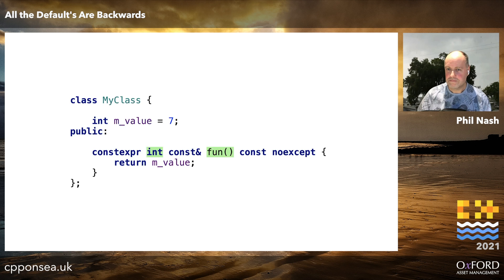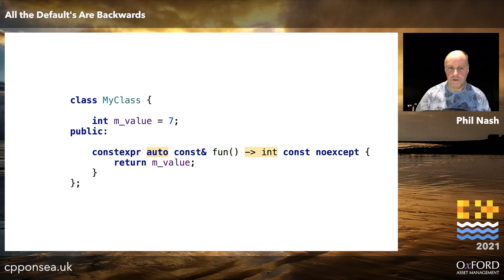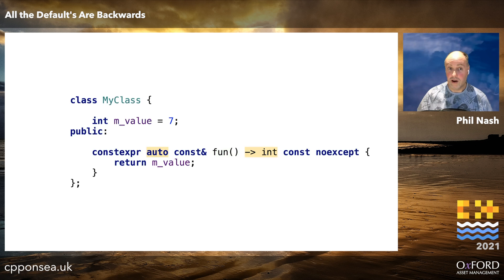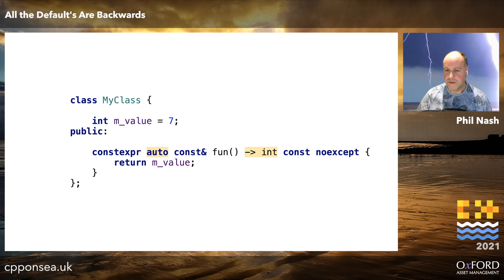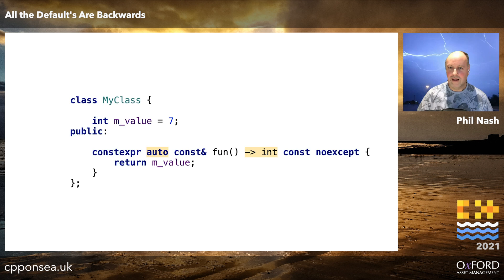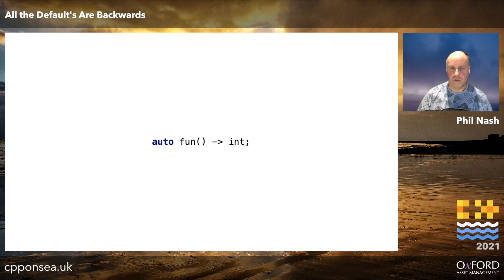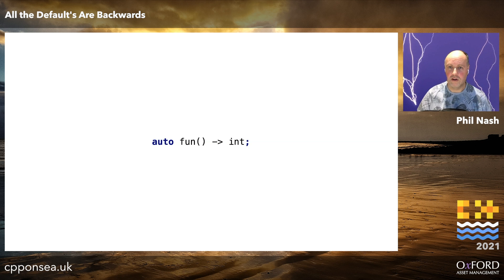We could also mix in what we talked about in my previous talk — trailing return types. If we do that, which I've argued is a good thing, that's adding even more noise. We've got even more keywords. So we really wanted to get back to something like this, with trailing return types and all the rest being defaults that you can opt out of.